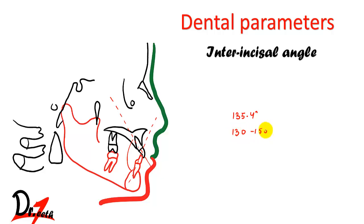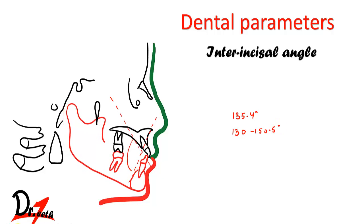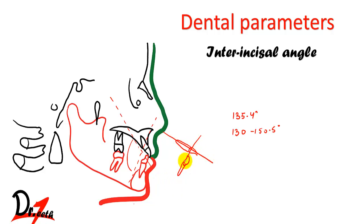Consider three types of patients. First is bi-maxillary protrusion, where both the maxilla and the mandible are forward. In this case the teeth are also protruded, so when we draw the inter-incisal angle it will be lesser. In bi-maxillary protrusion the inter-incisal angle will decrease.